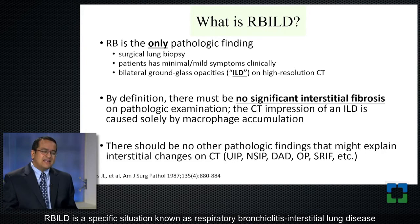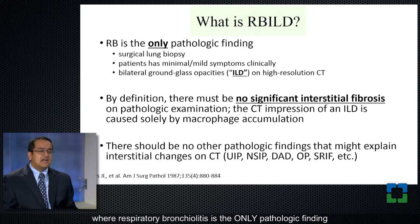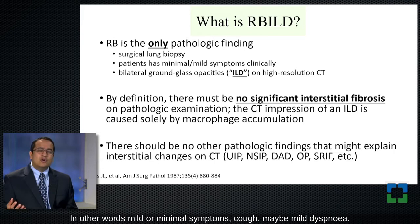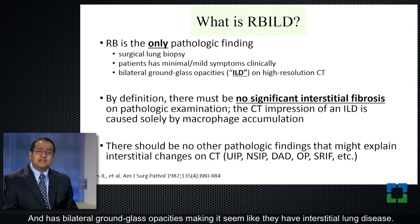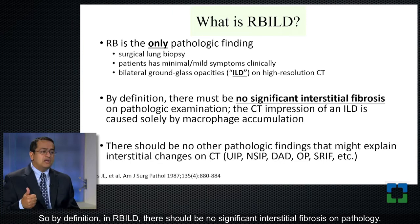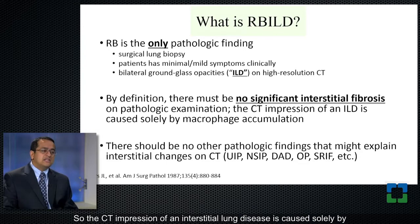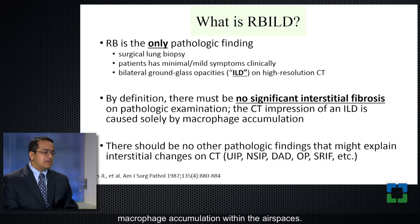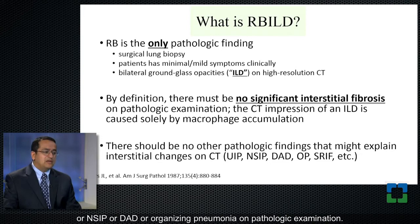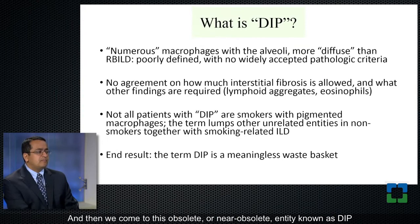Now, what is RBILD? RBILD is a specific situation known as respiratory bronchiolitis interstitial lung disease, where respiratory bronchiolitis is the only pathologic finding in a surgical lung biopsy in a patient who seems to have interstitial lung disease clinically — in other words, has mild or minimal symptoms, cough, maybe mild dyspnea, and has bilateral ground glass opacities, making it seem like they have interstitial lung disease, whereas the only thing they have on the biopsy are these smokers' macrophages. So by definition, in RBILD, there should be no significant interstitial fibrosis on pathology. That's a very important point. The CT impression of an interstitial lung disease is caused solely by macrophage accumulation within the airspaces. The second thing about RBILD is that it's a diagnosis of exclusion — you shouldn't have any other explanation for interstitial changes such as UIP or NSIP or DAD or organizing pneumonia on the pathologic examination.